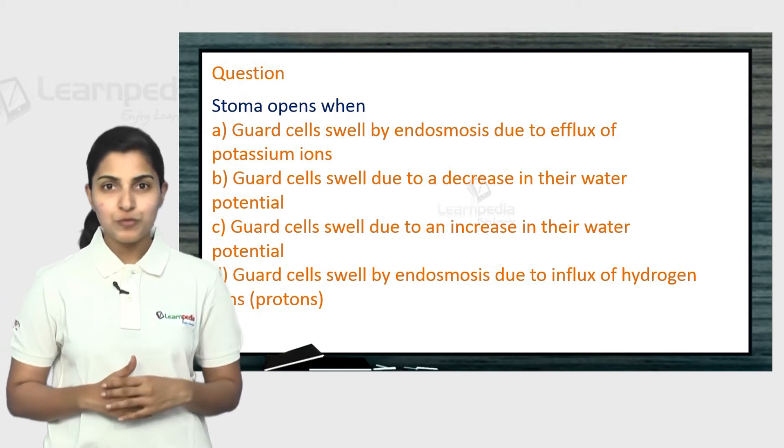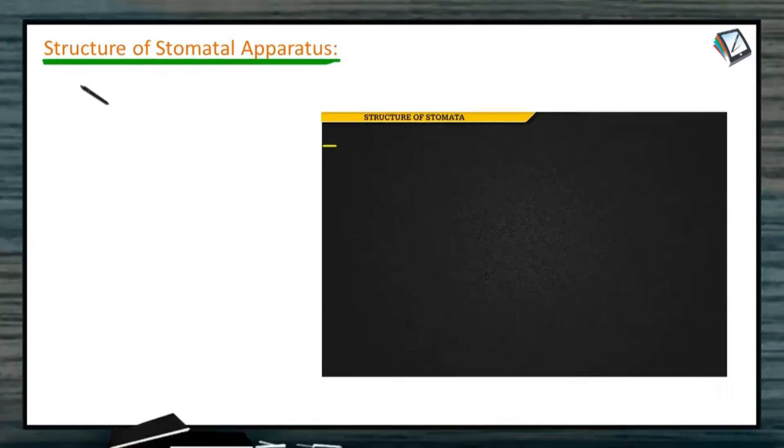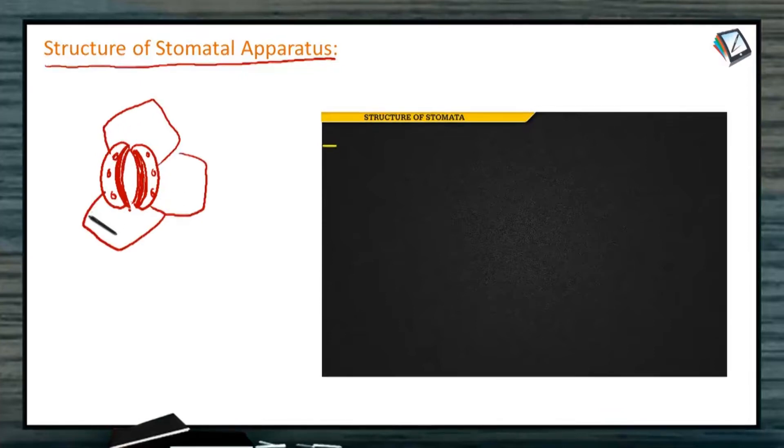Structure of Stomatal Apparatus: Stomatal apparatus consists of two guard cells, and these guard cells have a thick wall towards the center and a thin wall towards the outside. These guard cells contain a few chloroplasts. The guard cells are surrounded by four or less number of cells called subsidiary cells.